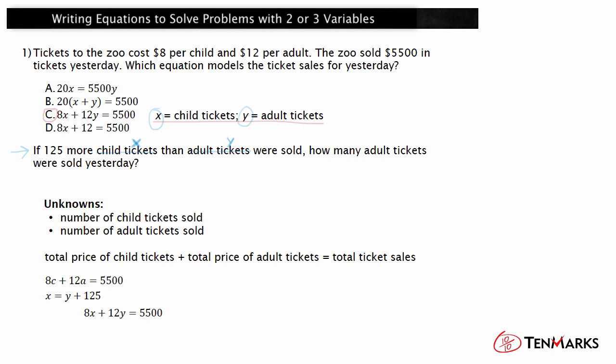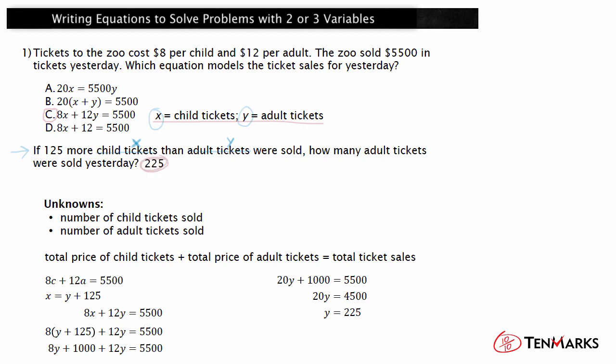To find a solution to the system, you can graph the equations and see where they intersect, or you can use an algebraic method to solve. Since X is by itself on one side in one of these equations, let's use substitution. Substitute Y plus 125 in for X into the other equation. Distribute the 8, combine the Y terms, subtract 1000 from each side, and divide both sides by 20. This means the number of adult tickets sold was 225.